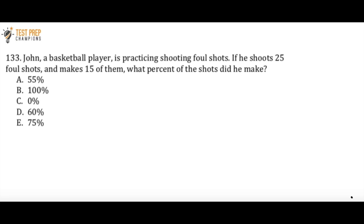John, a basketball player, is practicing shooting foul shots. If he shoots 25 foul shots and makes 15 of them, what percent of the shots did he make? Is the answer A, B, C, D, or E? Now's your chance to pause the video, try to figure this out, and whenever you're ready just unpause the video and we'll go over the answer.